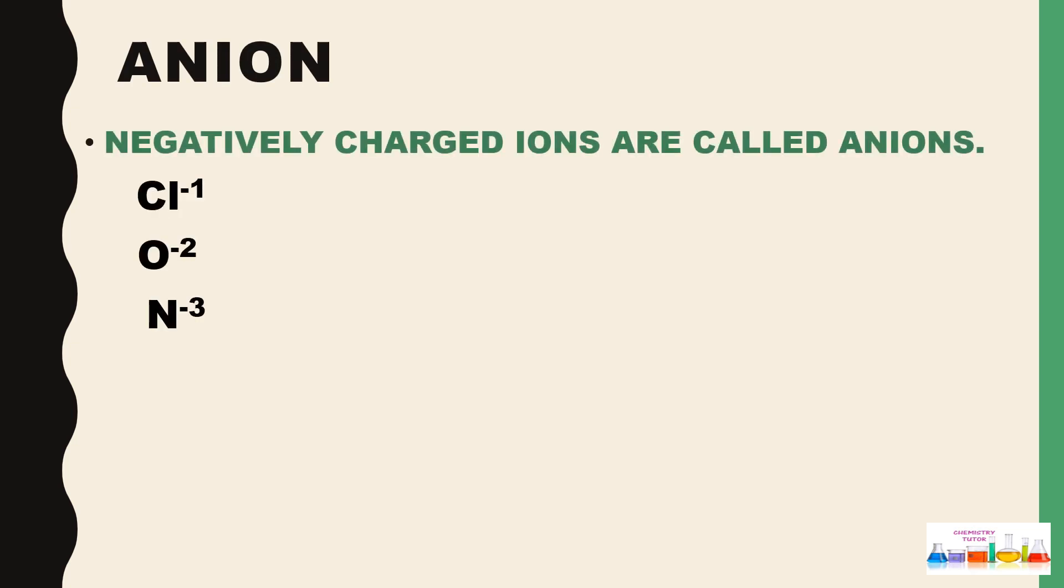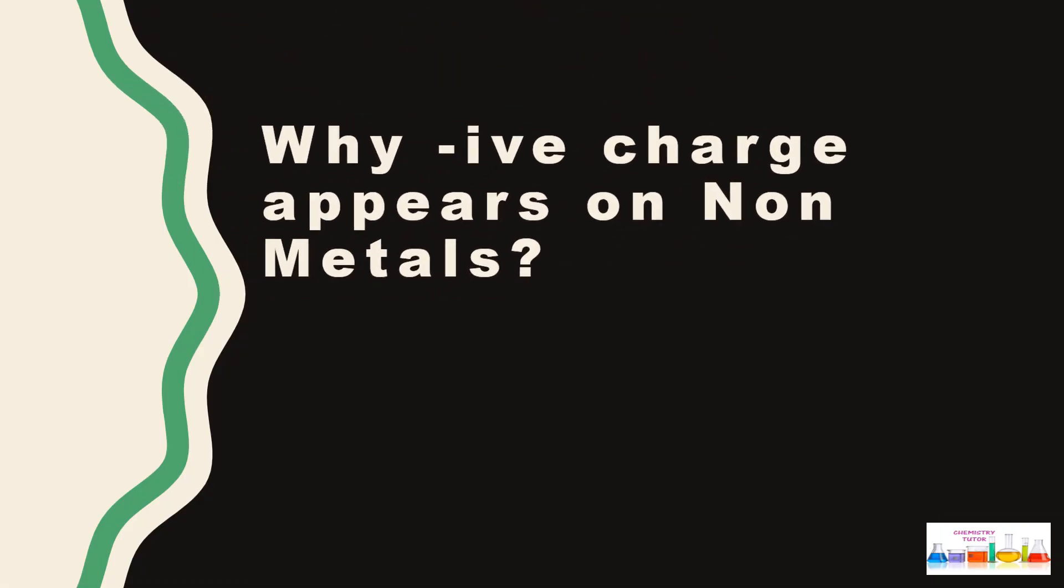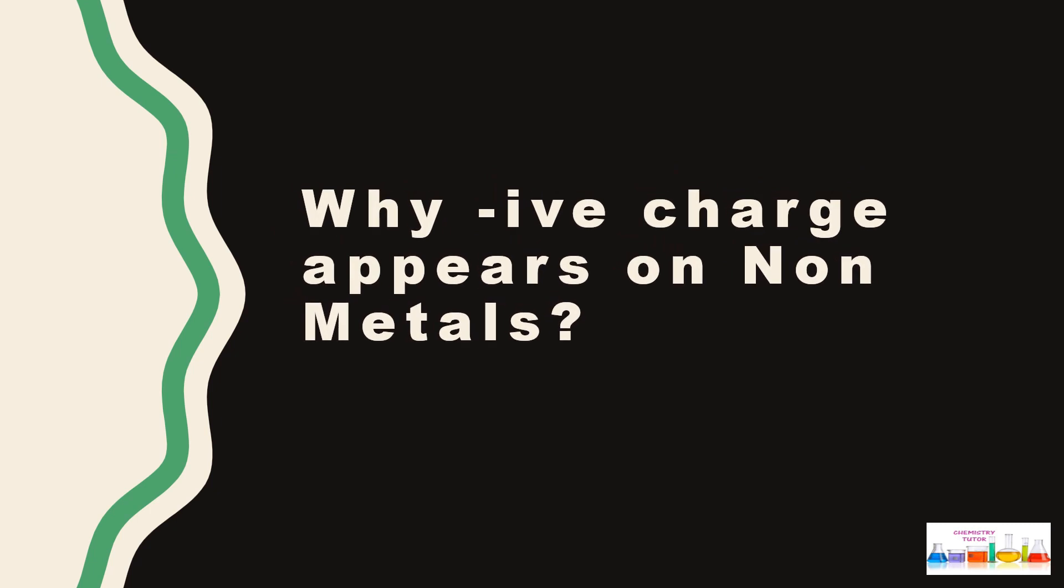Anions are negatively charged ions called anions. If we take examples: chlorine -1, oxygen -2, and nitrogen -3. The question arises, why does negative charge appear on non-metals?